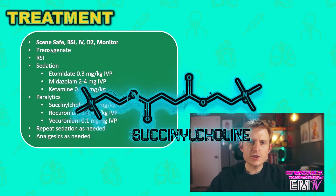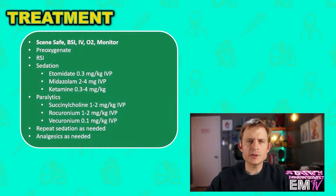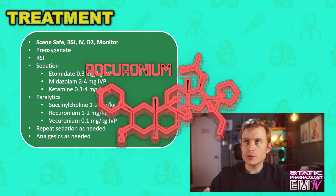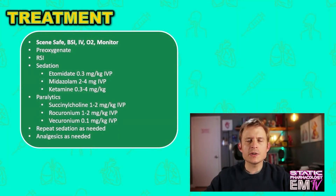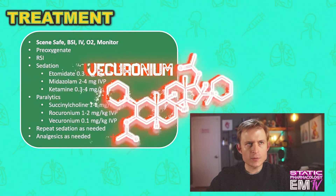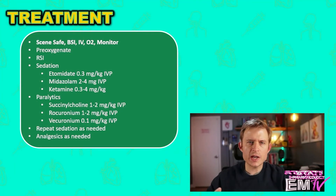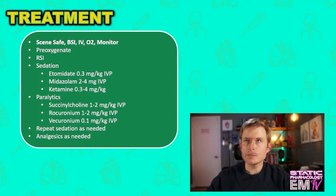Succinylcholine, which has the shortest duration of action, is dosed at 1–2 mg per kg. Rocuronium, which has a longer duration of action, is also dosed at 1–2 mg per kg. Vecuronium is my personal favorite, dosed at 0.1 mg per kg. It has a longer duration of action and a longer onset of action than rocuronium and succinylcholine.